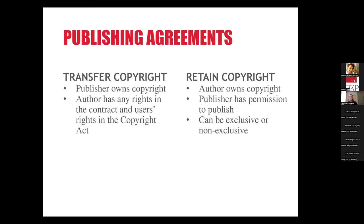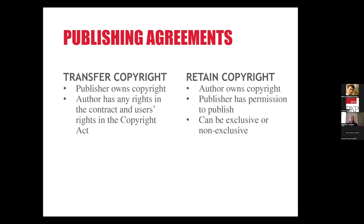In open access publishing, typically the author will retain copyright and only transfer to the publisher the specific rights needed to publish the article and make it available. So if you're creating or managing a journal, you'll want to think about all the various ways that you will need to copy and use the article in order to manage the publishing process — both at the front end and the back end. This could include things like reformatting for PDF and HTML versions, making backup copies, taking excerpts for promotional purposes, or translating in the context of your journal. Make sure that all of those are covered by the terms of the contract.